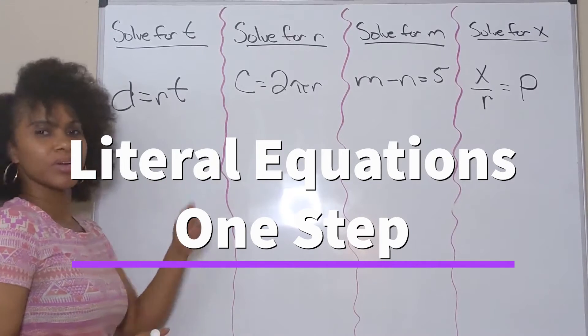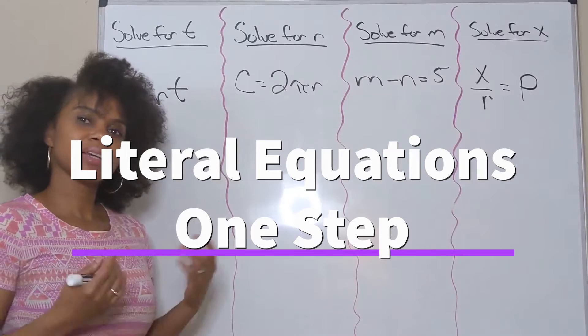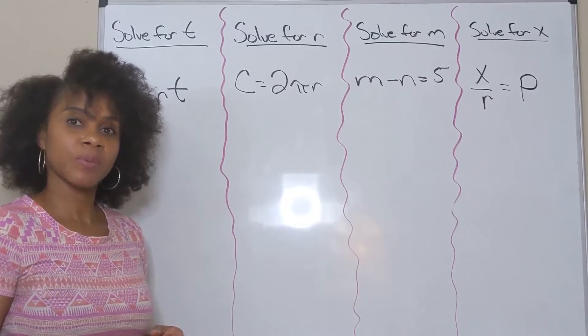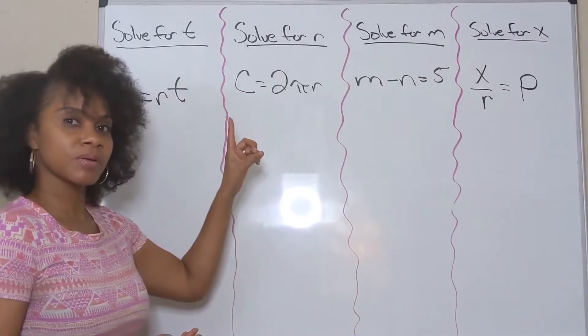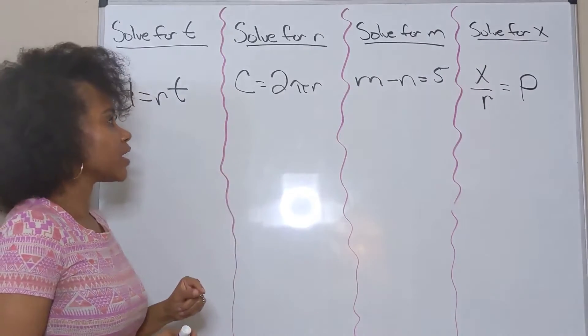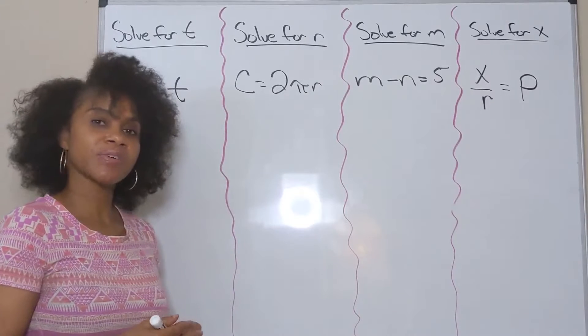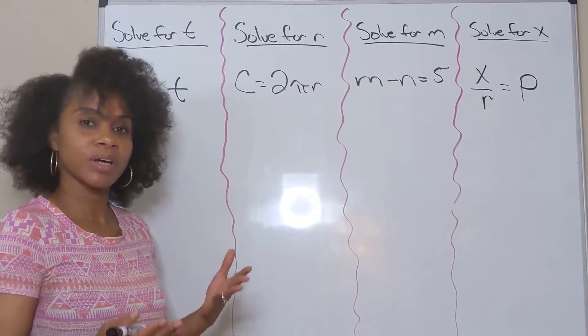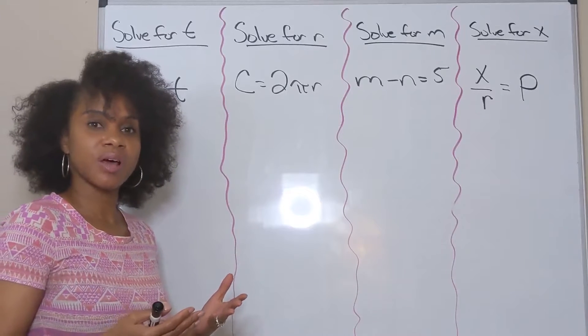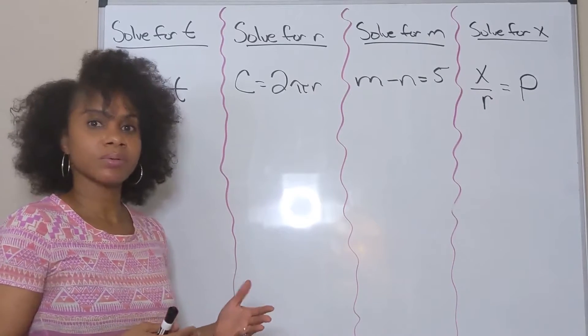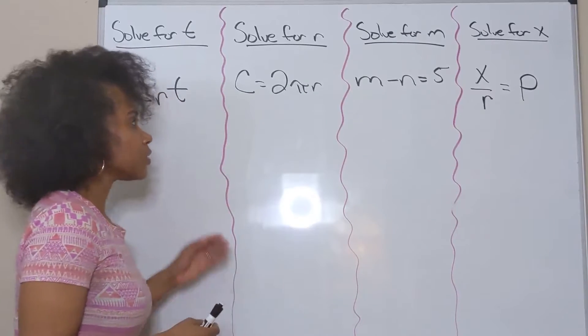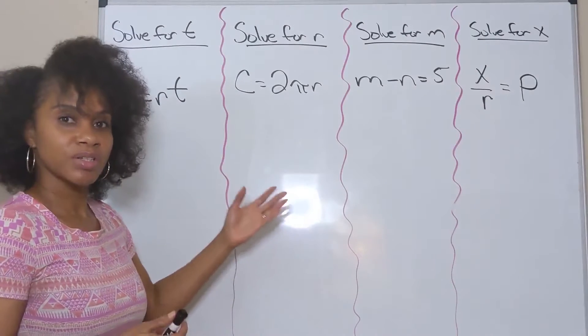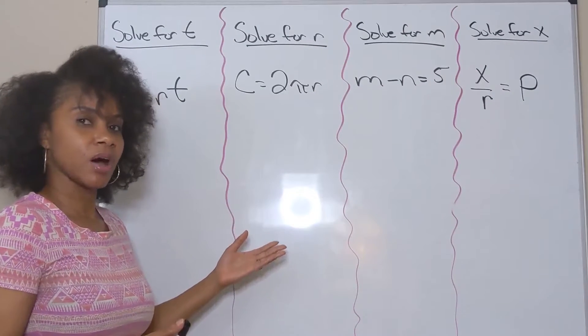We're looking at literal equations, which are basically equations with more than one variable. We have some basic one-step literal equations here, and we're going to solve them using inverse operations. If you're solving a regular equation with numbers, you get an answer like n=2 or x=-3. With literal equations, your answers are another equation, so you're basically rewriting the equation and solving for your given variable.